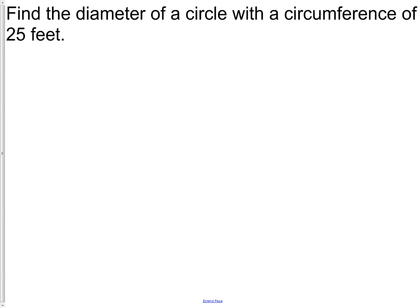One more question. Find the diameter of a circle with a circumference of 25 feet. Now I want to actually find the diameter when I'm given the circumference. I'm going to do the same thing as I did the last question, which is to put the formula down, but which formula should I use for circumference? Well, I want to find the diameter, so I'm going to use the circumference formula that uses diameter.